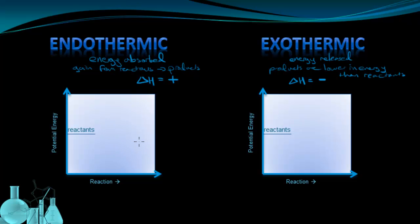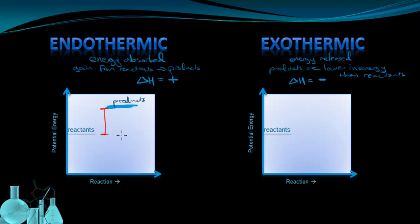We're going to start by using a very basic version. In the first one over here on the left, we're going to show an endothermic change. We have potential energy on the y-axis and the reaction coordinate — which is just the direction the reaction goes in — on the x-axis. The reactants start off at some certain amount of energy. Sometimes these diagrams can have numbers on the axis, but we're treating it generally. Since energy is absorbed, the products have to have more energy, so they're up higher. The distance on this diagram between the products and reactants is equal to the delta H, which is positive because the energy is going up.